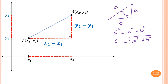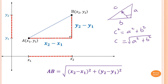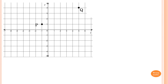So if a = (y2 − y1) and b = (x2 − x1), the distance AB = √((x2 − x1)² + (y2 − y1)²). It's just Pythagoras' theorem. Please keep that in mind — this is the rule to find the distance between two points.